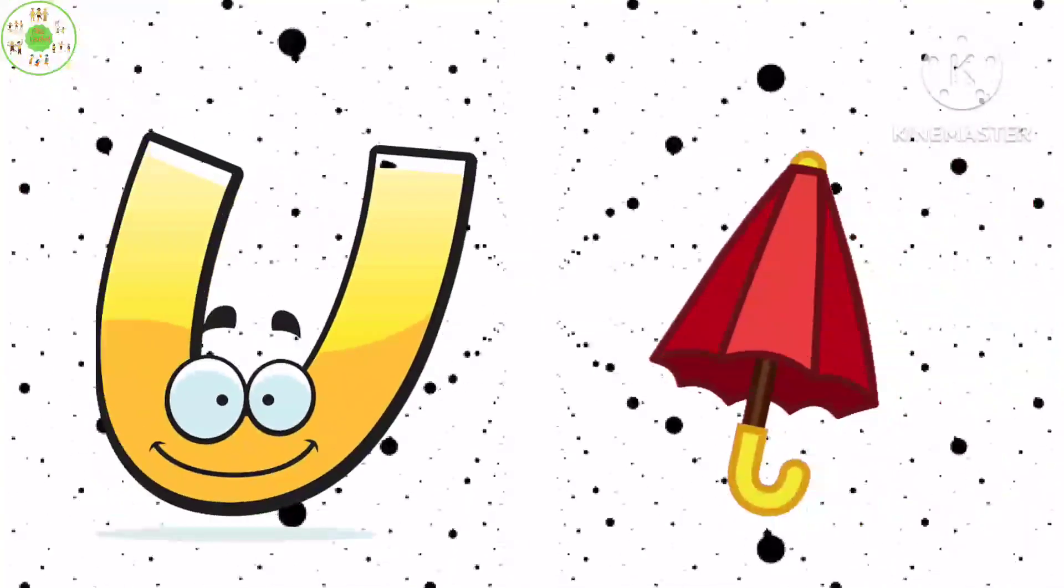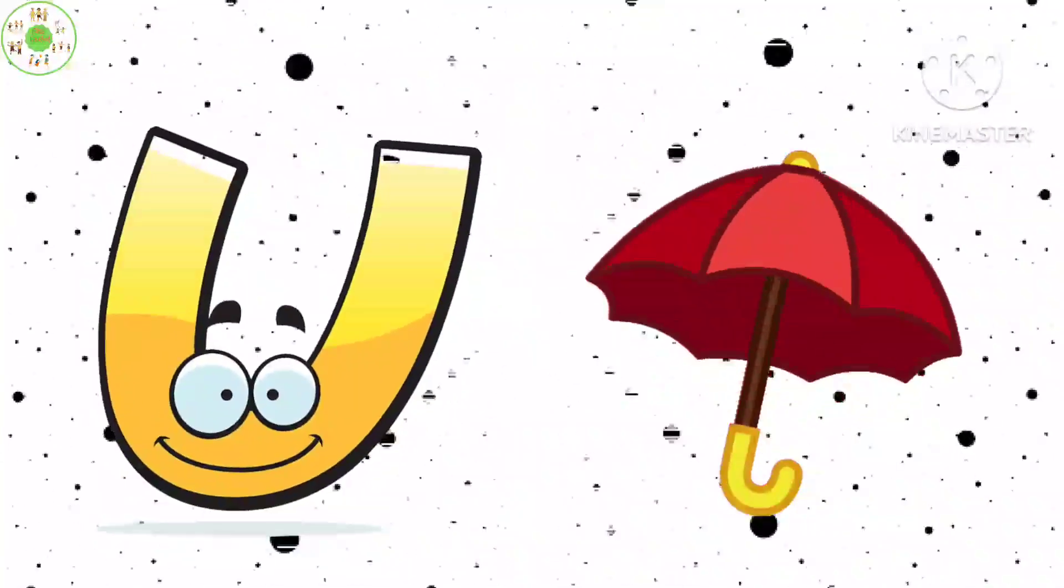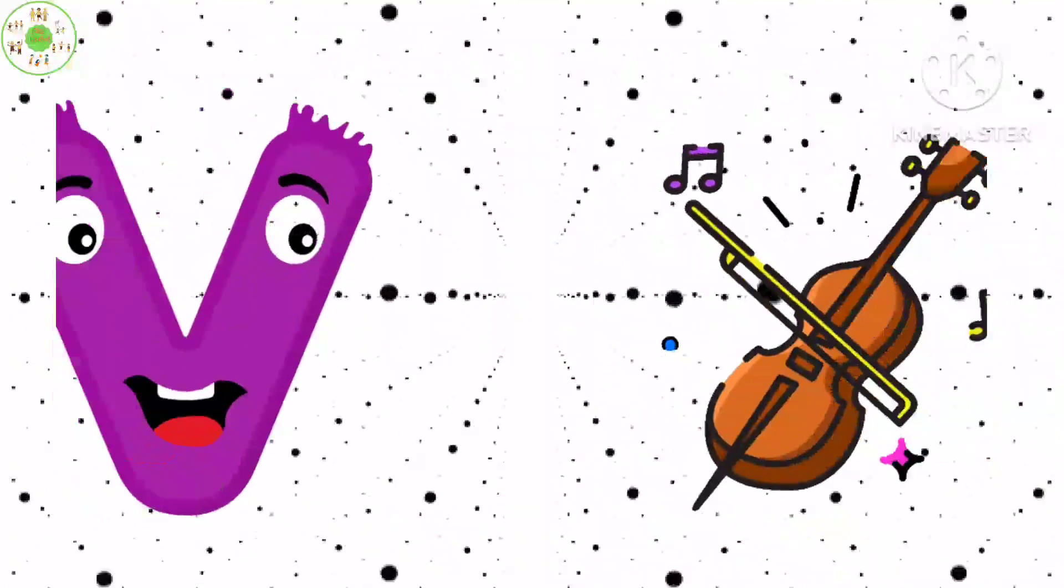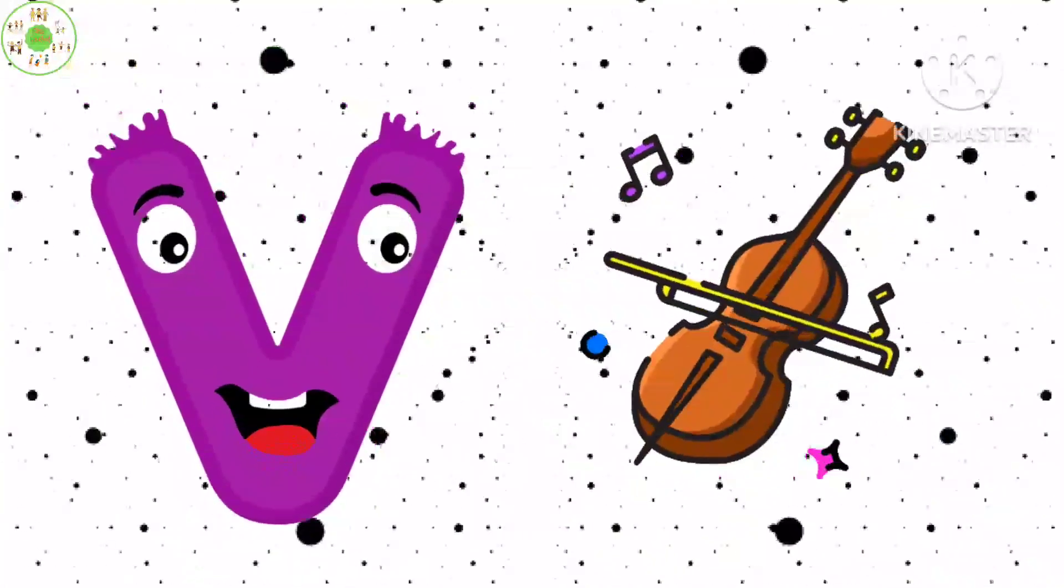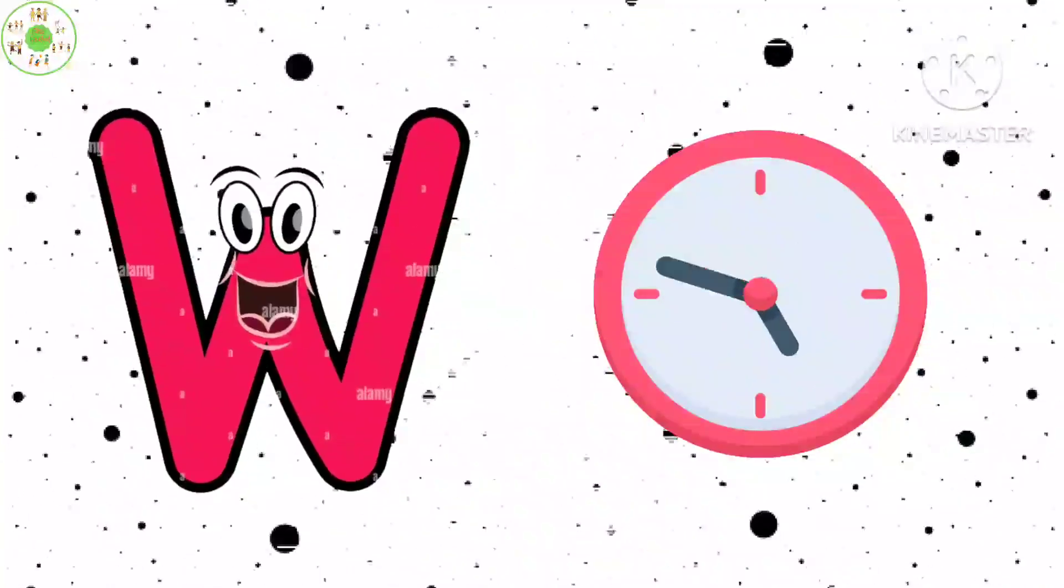U is for Umbrella, U-U-Umbrella. V is for Violin, V-V-Violin. W is for Watch, W-W-Watch.